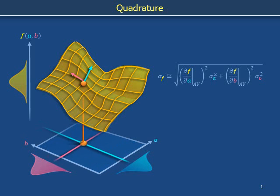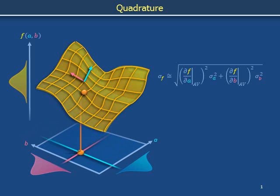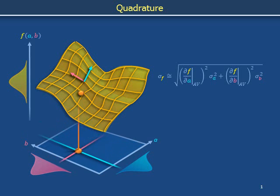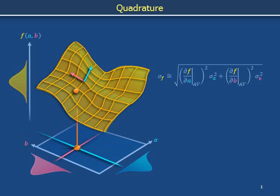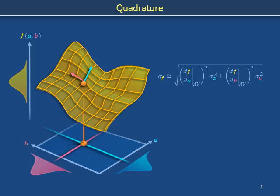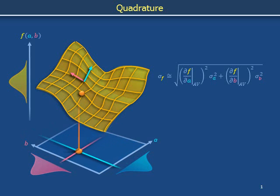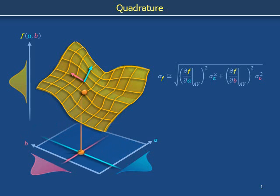If the fluctuations in A and the fluctuations in B are statistically independent, then the standard deviation in F resulting from fluctuations in A and fluctuations in B is the square root of the sum of the products of contributing squared partial derivatives and contributing standard deviations as shown. Adding squared quantities in this way is referred to as addition in quadrature, and we will refer to this formula as the quadrature formula of uncertainty propagation.